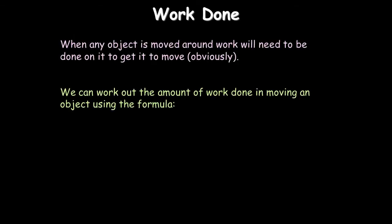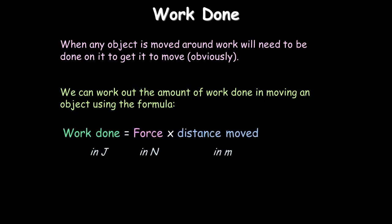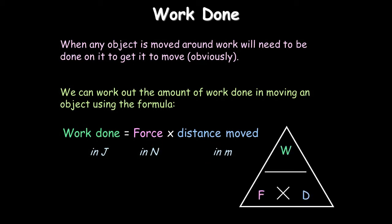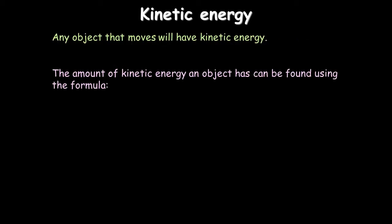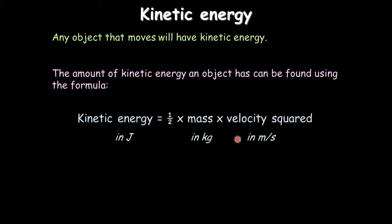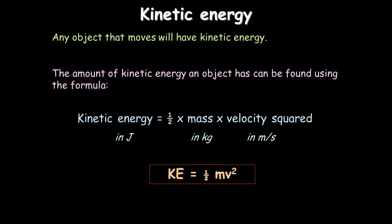Work done is a term for energy used when a force moves through a distance. The equation is: work done equals force times distance moved. Work done is a type of energy, so it's measured in joules. Put it in a triangle to rearrange. The next equation is for higher only — kinetic energy. Start at the end: square the velocity, multiply by the mass, multiply by a half, and that gives kinetic energy in joules.